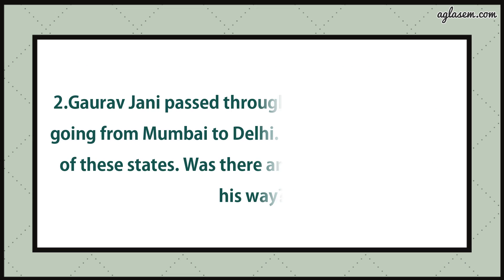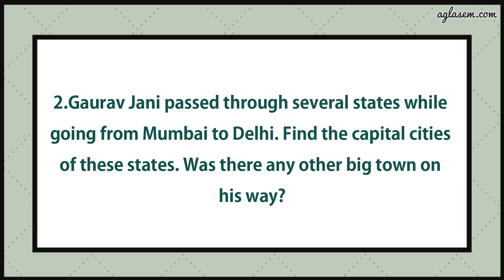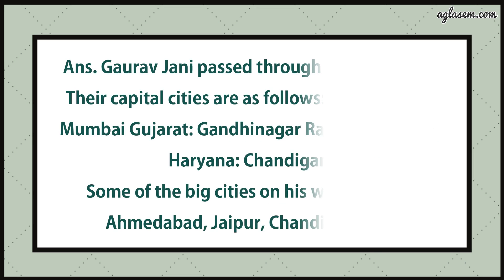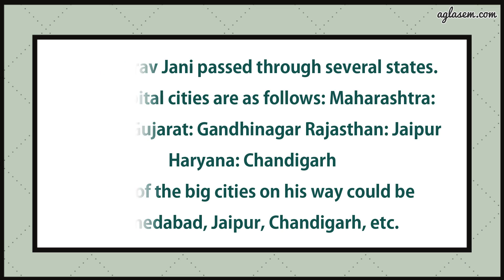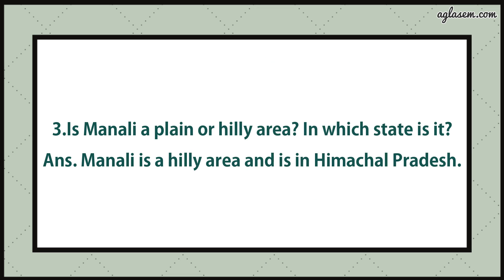Question number two says: Gaurav Jani passed through several states while going from Mumbai to Delhi. Find the capital cities of these states. Was there any big town on this way? The answer is: Gaurav Jani passed through several states; their capital cities are Maharashtra - Mumbai, Gujarat - Gandhinagar, Rajasthan - Jaipur, Haryana - Chandigarh. Some of the big cities on this way would be Ahmedabad, Jaipur, Chandigarh, etc.